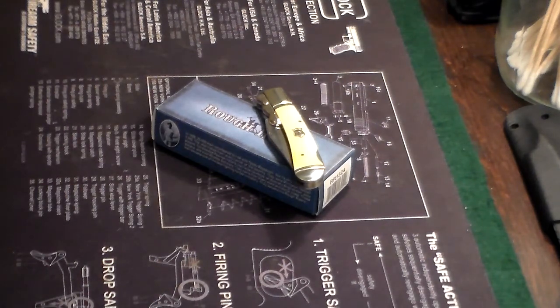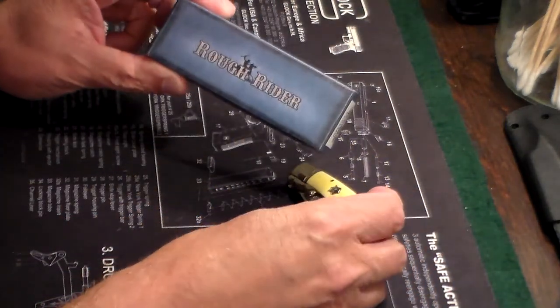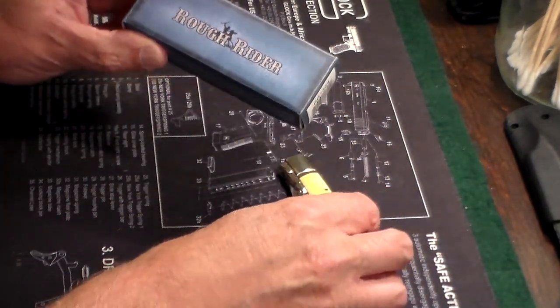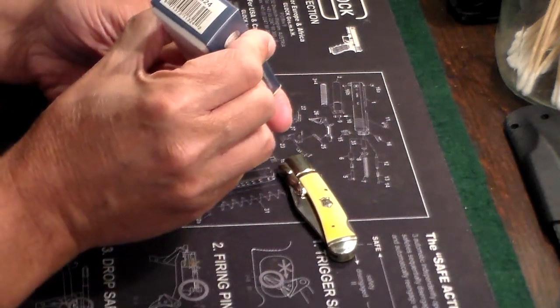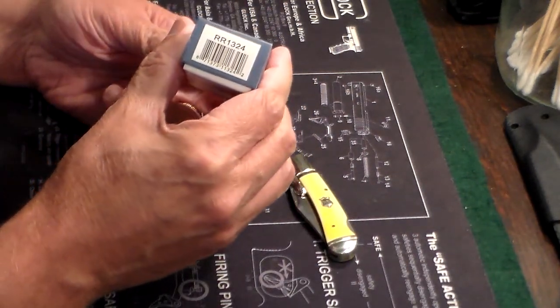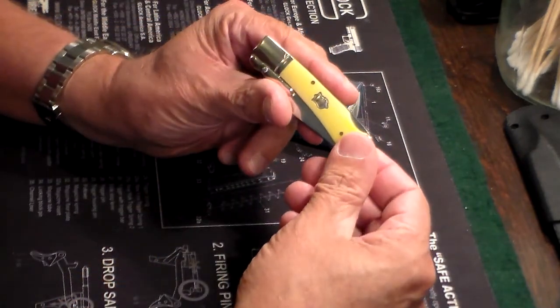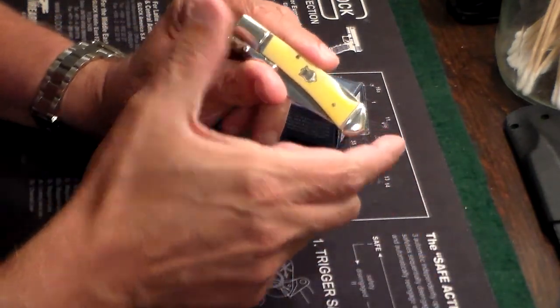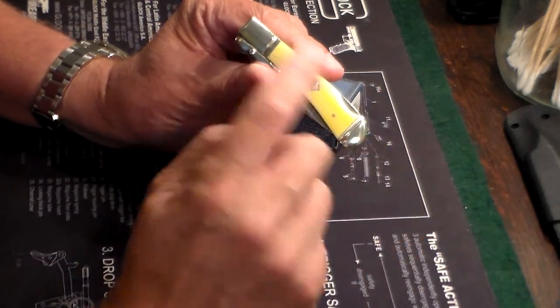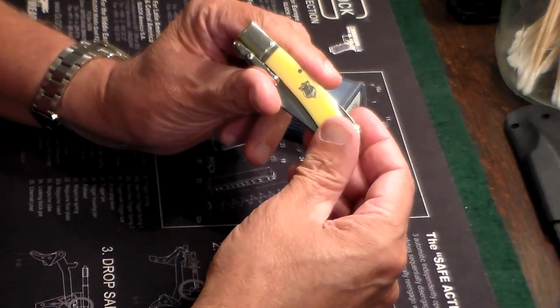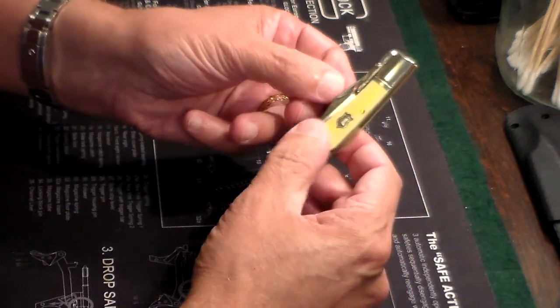I saw this one on Amazon and for ten bucks how could you go wrong. This is a Rough Rider knife and it's called a swing guard, model one-three-two-four. Basically it's just a little lock back knife and it's really tiny, only three and a half inches closed.